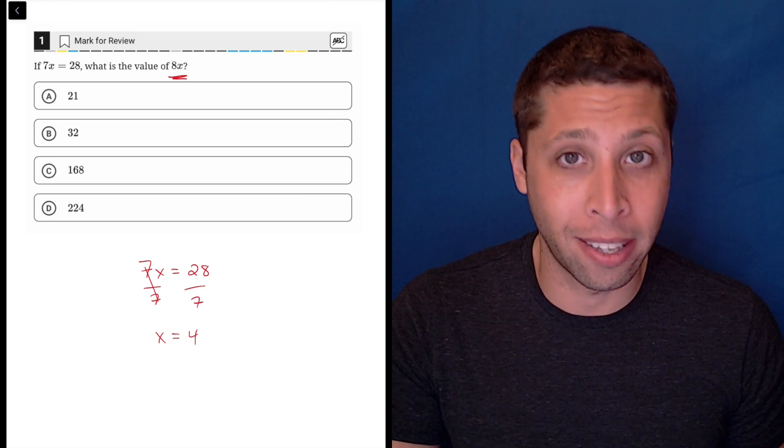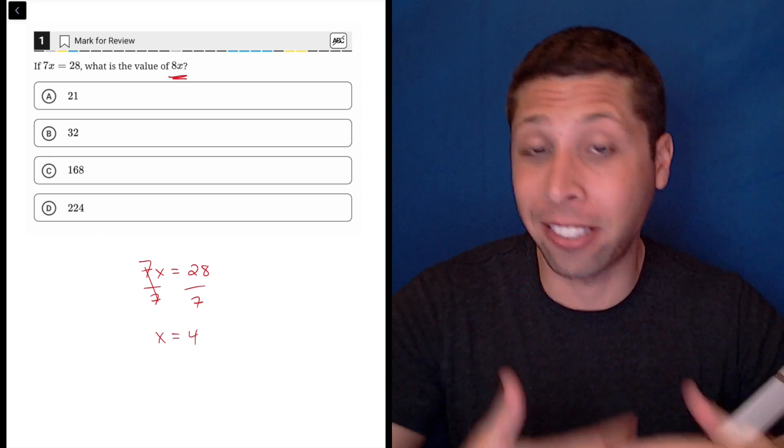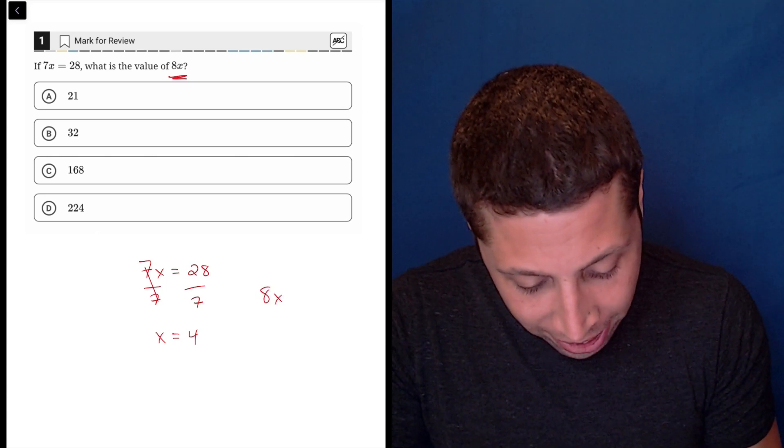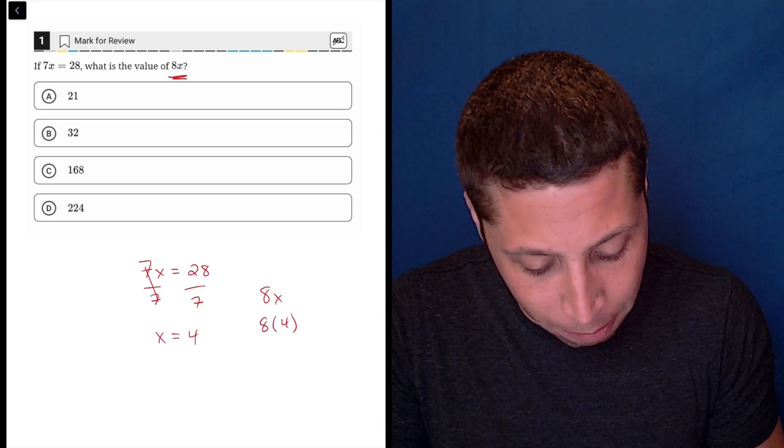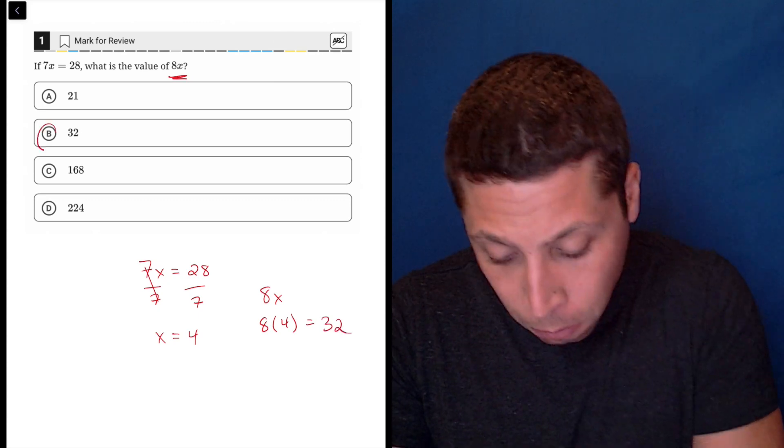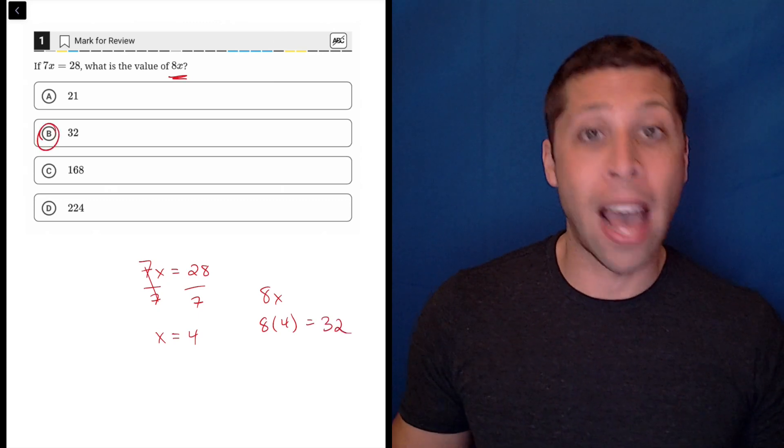So in this case, they don't want the value of x, they want the value of 8x for really no reason. So 8x is going to be 8 times 4, which is 32, choice B, and that is the answer.